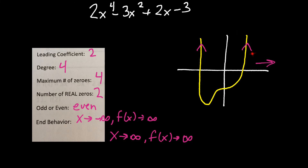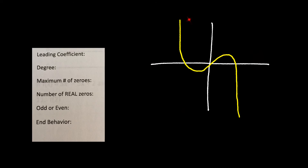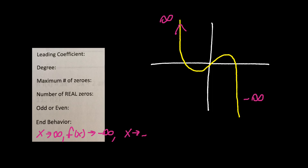What if we're given only the graph without the function? Let's find out what we can determine. End behavior is easy to start with — this end is going towards positive infinity and this one towards negative infinity. So as x approaches infinity, f(x) approaches negative infinity, and as x approaches negative infinity, f(x) approaches positive infinity. We can still determine end behavior from just the graph.